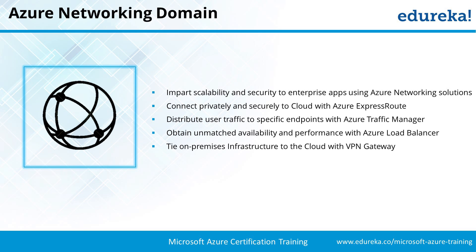We can also talk about traffic managers — if users log in from different locations, someone logging in from the US should be redirected to a server in the US. If you want a direct connection to Azure cloud, for example as Company A you go to Microsoft and ask them to host your private cloud and set up a direct connection to your network — they set up an express route. For managing the cloud using VPN, we talk about how to connect to the cloud to manage services.